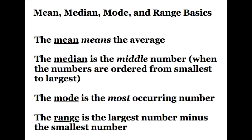A lot of students remember that the median is the middle number fairly easily, but you have to remember to put the numbers in order first. The mode is the most occurring number in the data set. The mode can be identified by simply looking for the number that shows up the most in the data set.